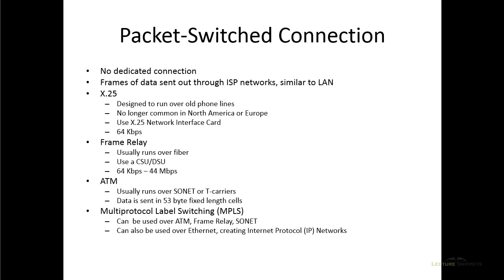Instead of using a dedicated line, we can also use the packet switched connection. Packet switching takes your data, packages it into a frame, and sends it through a switch-based network — there is no dedicated connection. One option is X.25, which is not commonly used in the United States or Europe, but allows WAN connections over phone lines using a network interface card. You're looking at speeds up to 64 kilobits per second, so it's not a very fast option.